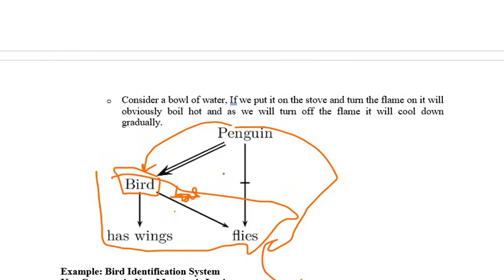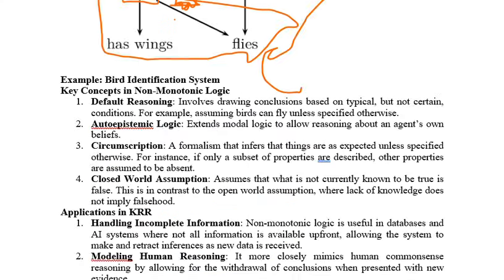If birds can fly and a penguin is also a bird, then a penguin should also fly — but a penguin cannot fly. Even though the penguin is a bird, it cannot fly. By adding the penguin as a bird condition to our concluded information that 'birds can fly and have wings,' the entire concluded information has changed. This is one of the best examples for non-monotonic logic.